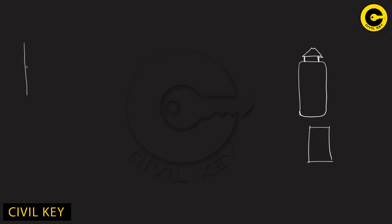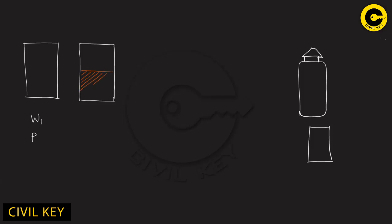The first weight is the weight of the pycnometer — this is W1. We add soil to the pycnometer — that is W2. The soil is the same as the specific gravity weight. We will denote W3 when we add the soil and add the water.